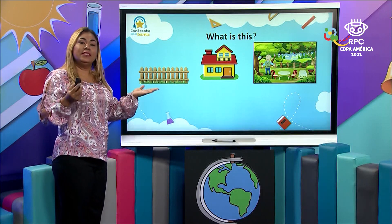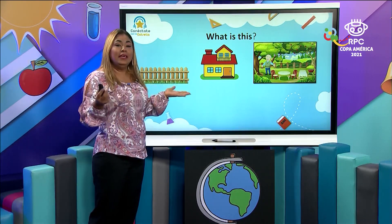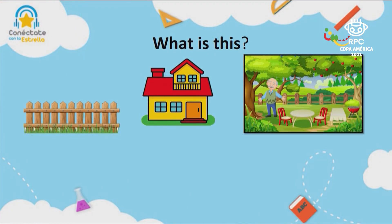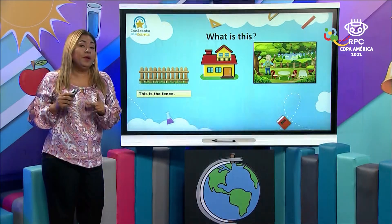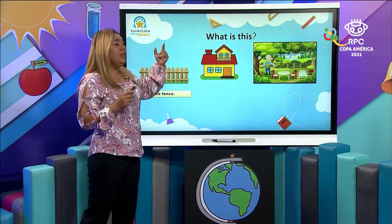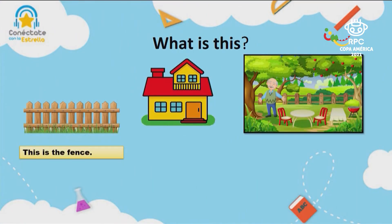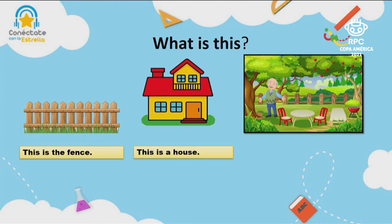Now let's practice about questions — W questions. What is this? Do you remember the name of this picture? Fence. This is a fence. That's the way we have to answer: this is a fence. What is this? This is a house. So what do you have to answer back? This is a house.